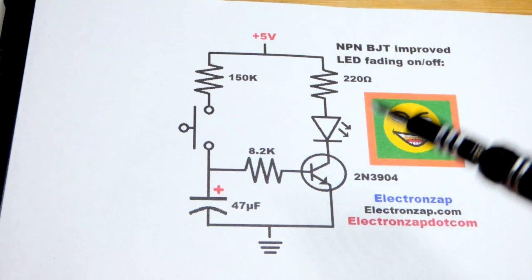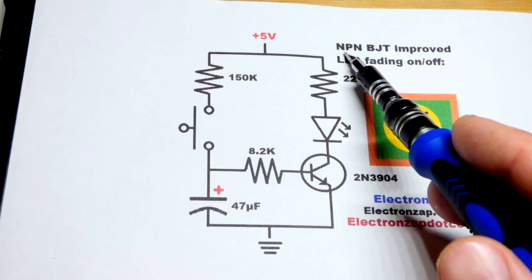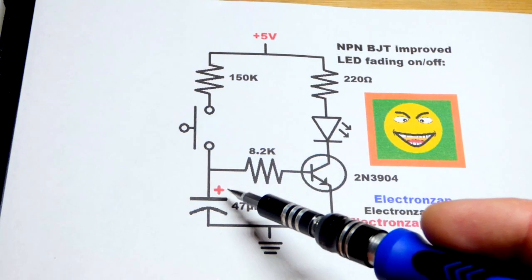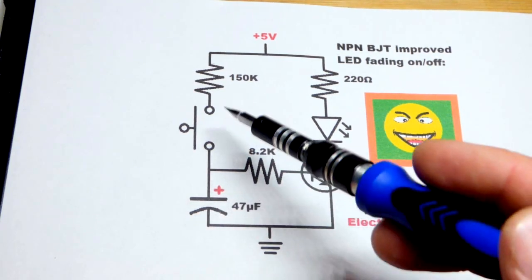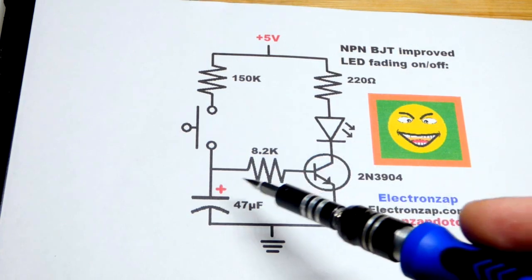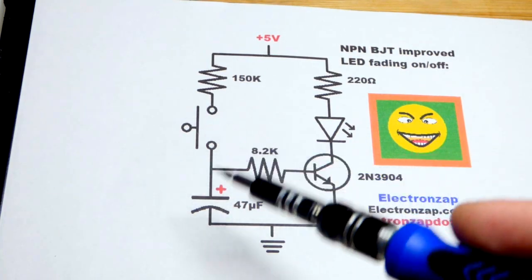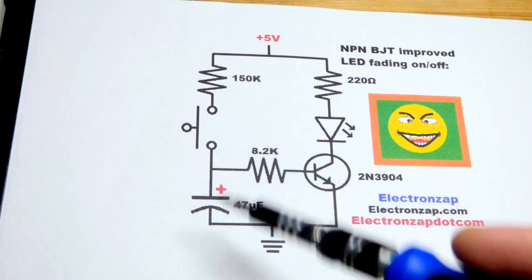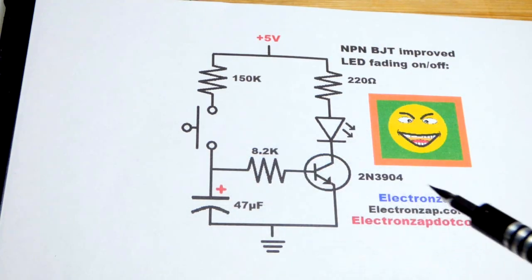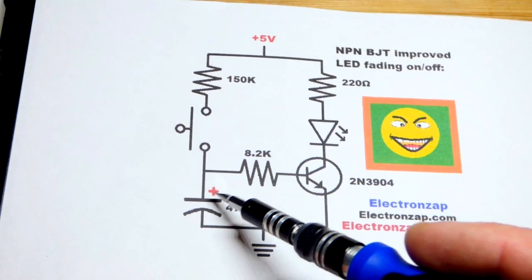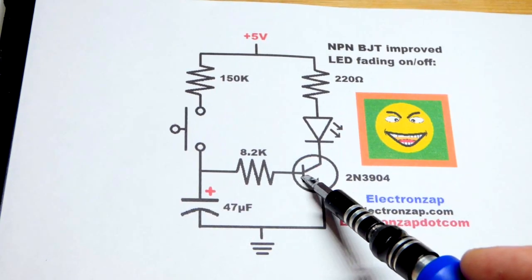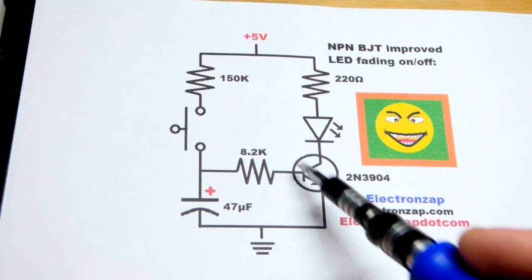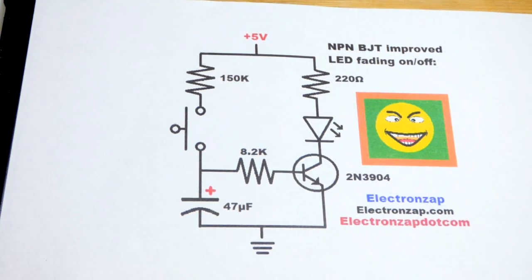In that video we used a capacitor directly, so it charged up and then current started flowing through the LED. When we released the switch it kept powering the LED as it ran out of energy and the LED got less bright. In this circuit we're using the transistor to take a very small amount of current and allow a lot more current to flow through it.